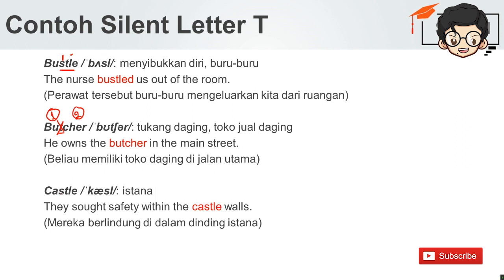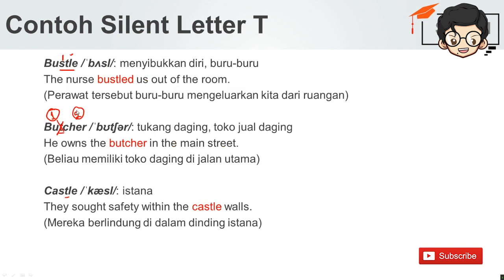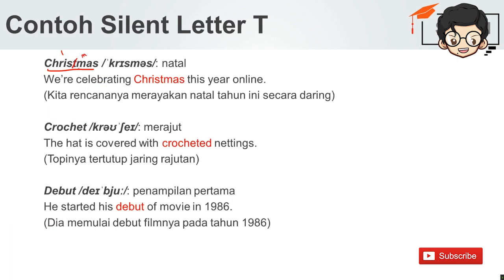Selanjutnya, sama diapit oleh S dan L: 'castle' — istana. They showed safety within the castle walls. Mereka berlindung di dalam dinding istana. Kemudian, ini juga dua silabel — silabel pertama berakhiran huruf T dan silabel kedua diawali huruf M: 'Christmas' — Natal. We're celebrating Christmas this year online. Kita rencananya merayakan Natal tahun ini secara daring.